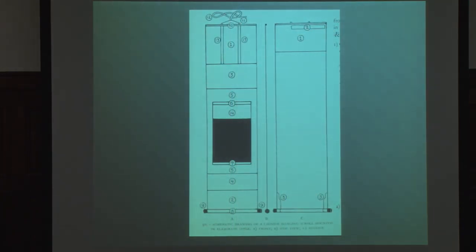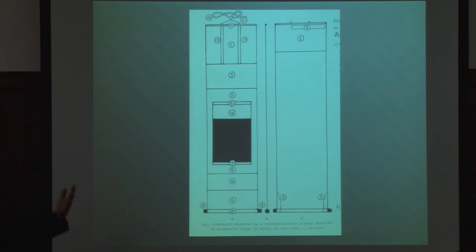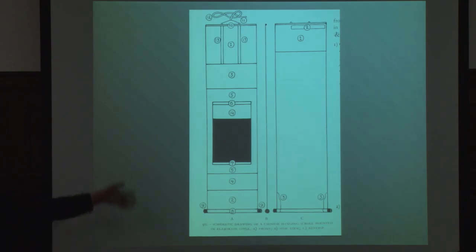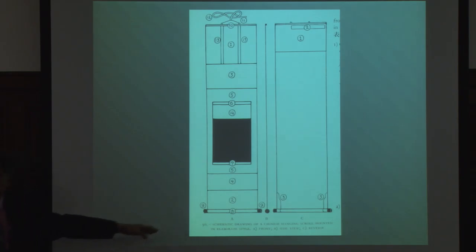Here's a diagram showing a hanging scroll in its various parts. The black rectangle is where the image should be mounted — we don't usually say 'frame,' we say 'mounted.' We mount the painting onto a scroll. At the very bottom is a roller that acts as the core of the scroll, and when you're displaying a hanging scroll it functions as a weight to keep the scroll hanging relatively straight. Up at the top is a cord so you can hang the scroll.